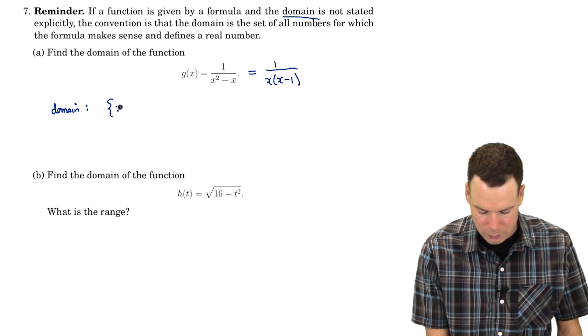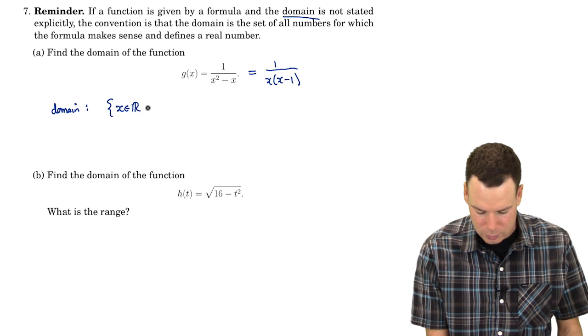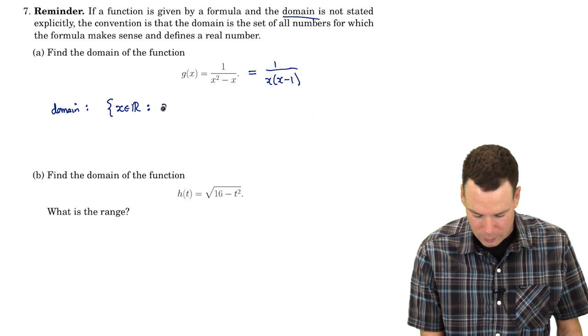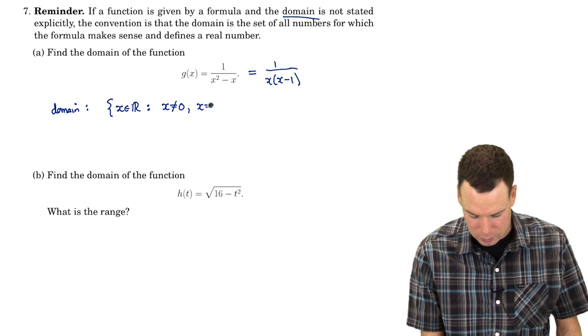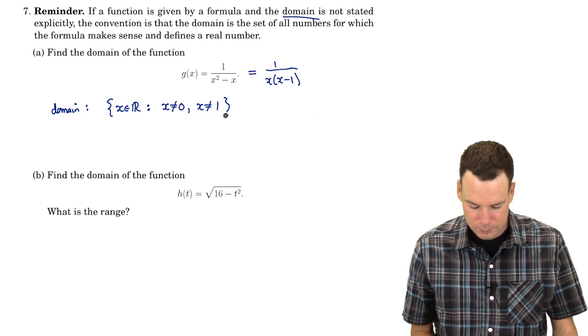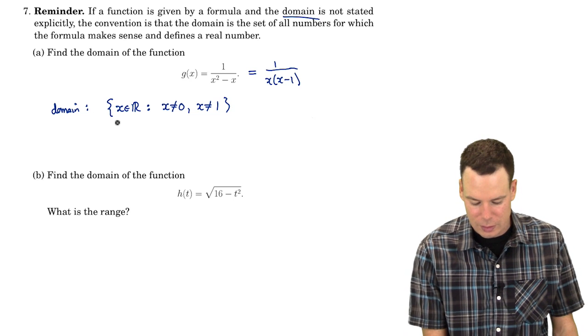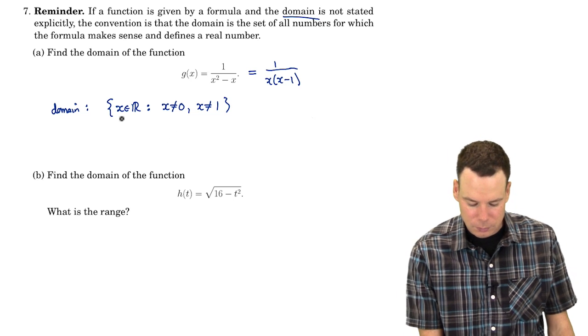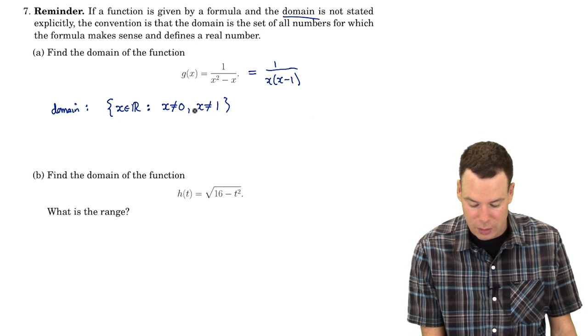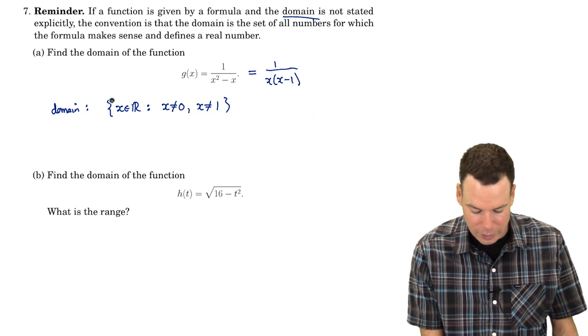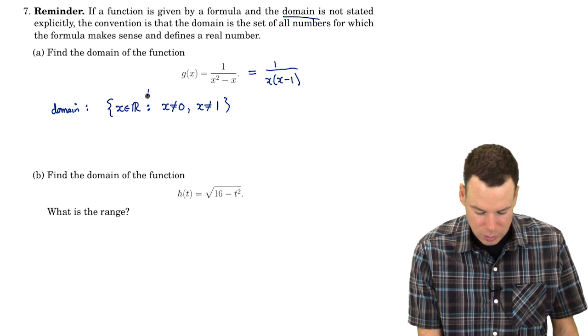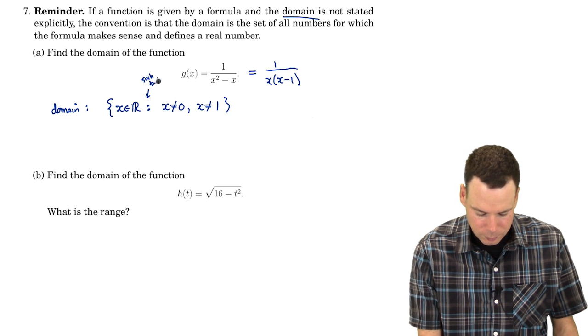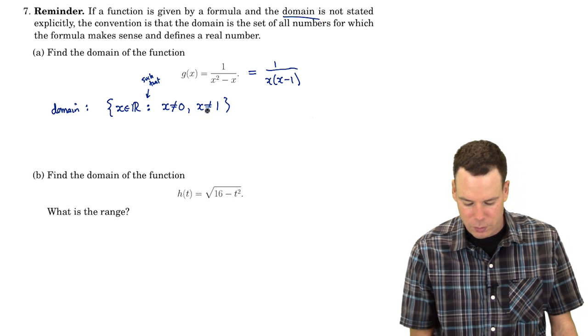Our domain is the set of all real numbers such that x is not zero and x is not one. This is written in set builder notation. I read the curly brackets as the set of all x in the real numbers such that x is not zero and x is not one.